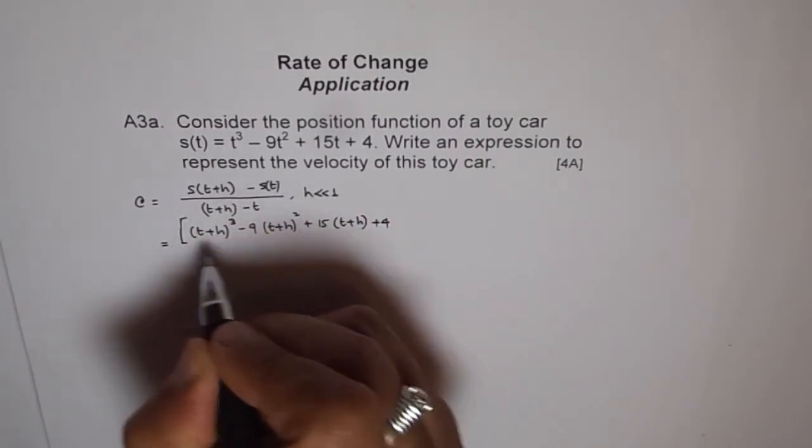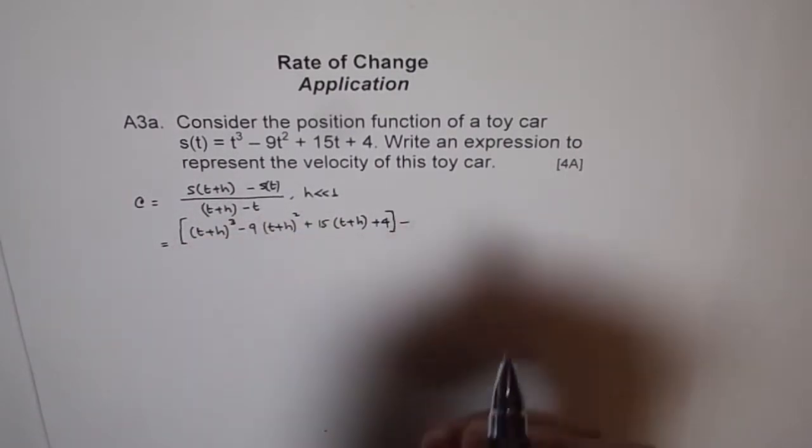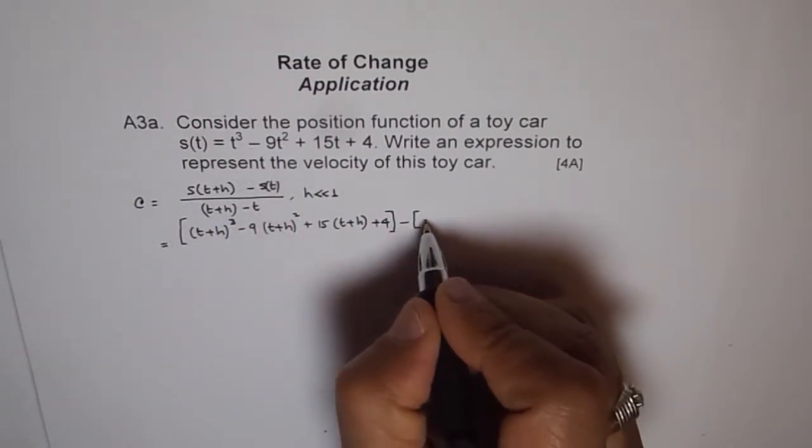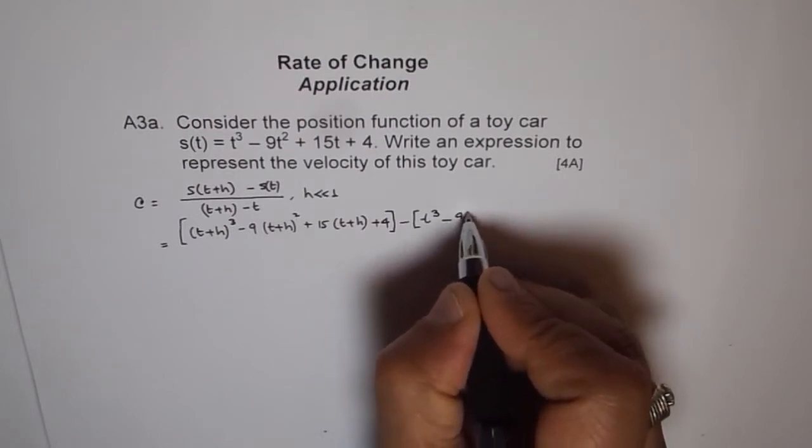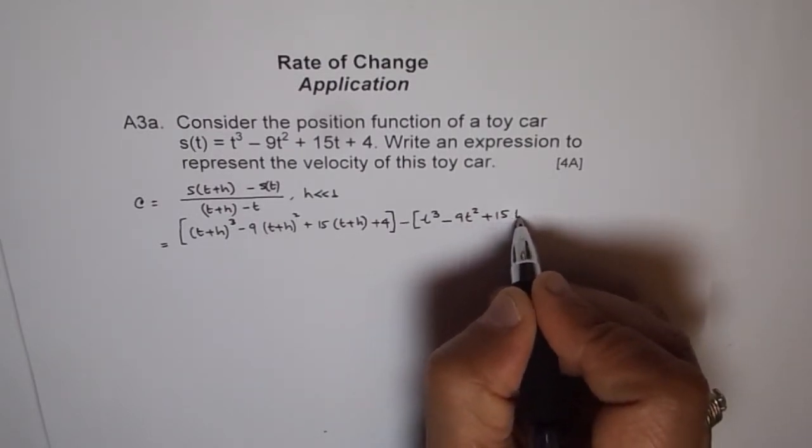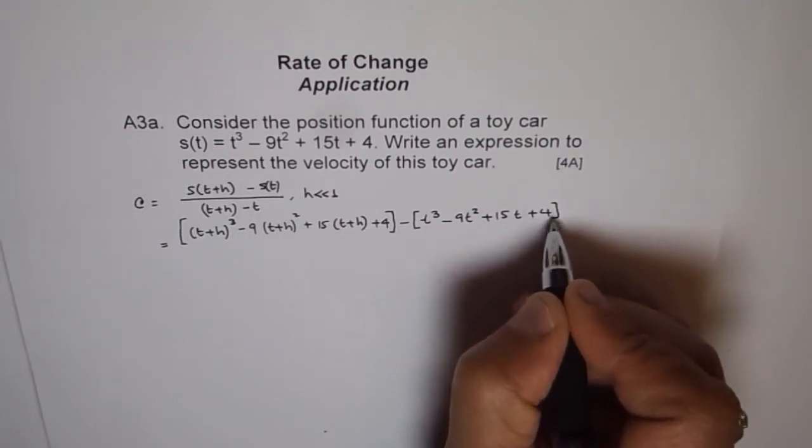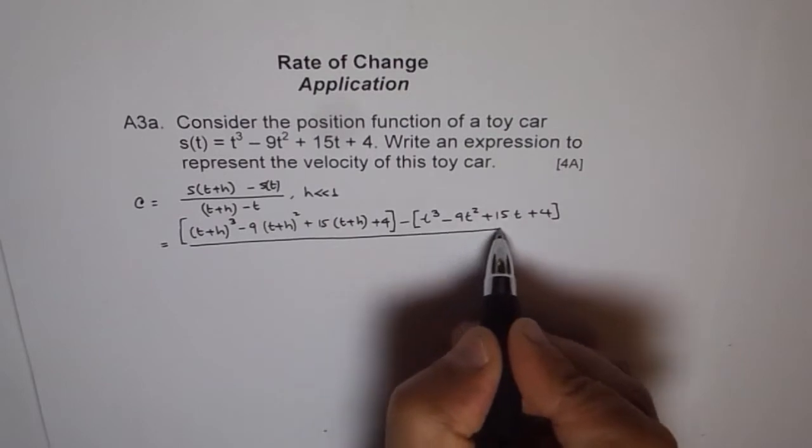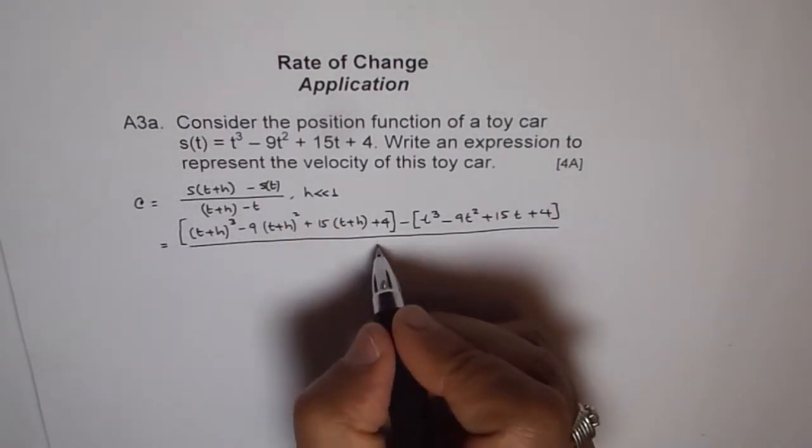And the next part is the same function s(t), which is t³ - 9t² + 15t + 4. Everything divided by (t+h) - t, which is h.